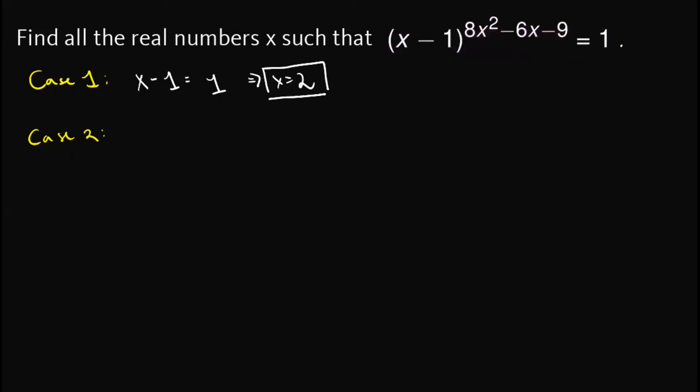So to write that one out formally, we have 8x squared minus 6x minus 9 is equal to 0, and x minus 1 is not equal to 0, which is simply x is not equal to 1. So x cannot be equal to 1 in this case. If we get 1 upon solving this quadratic equation, we cannot consider that as a valid value of x.